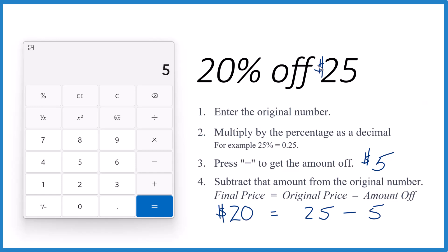So, if you take 20% off $25, that means you'll pay $20 and you'll save $5.